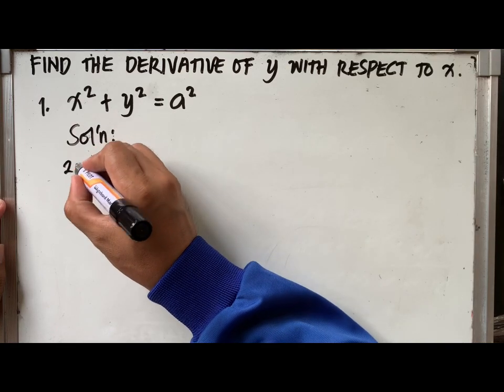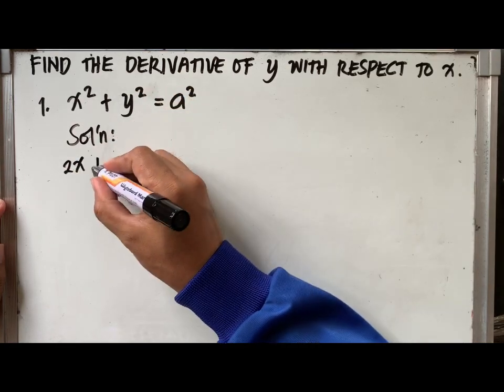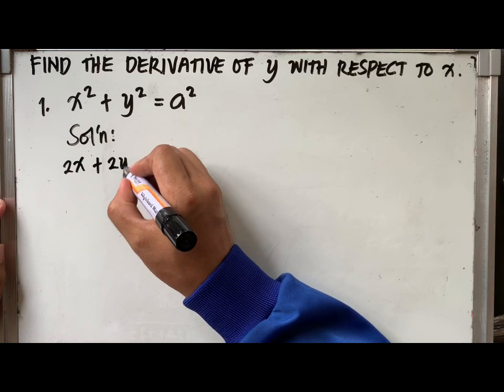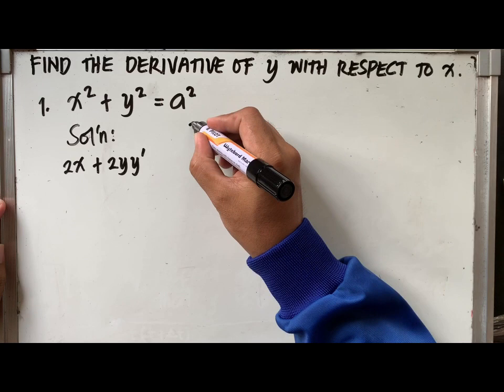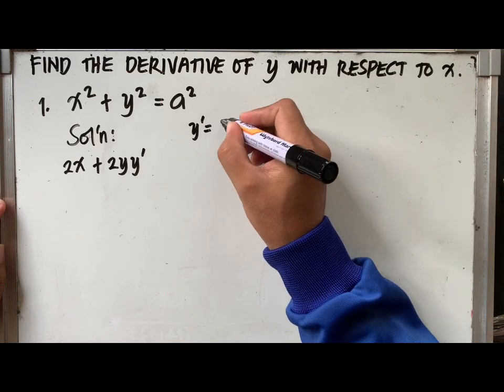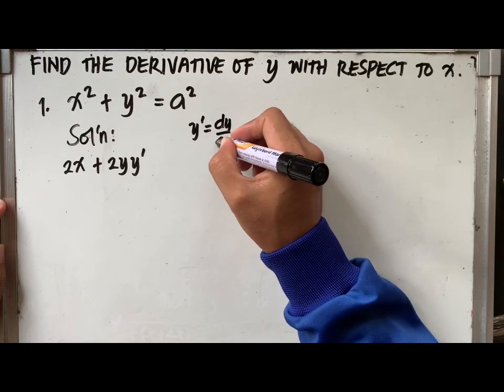So now let's differentiate the first term. x squared would be 2x. y squared would be 2y, y prime. It should be noted that y prime is equal to dy over dx.